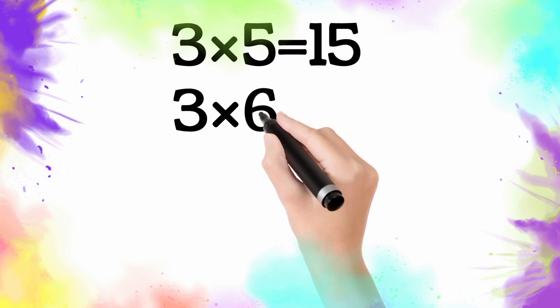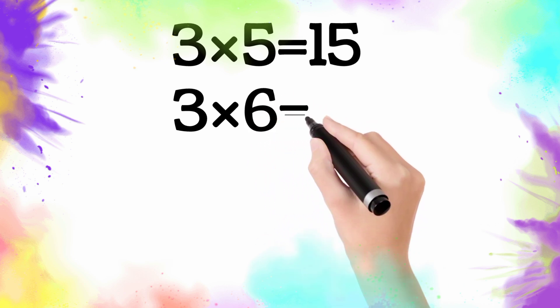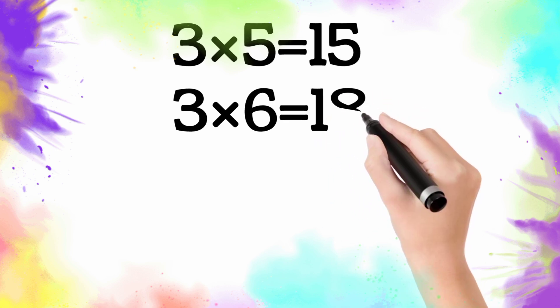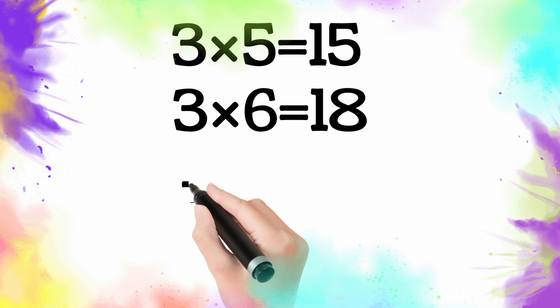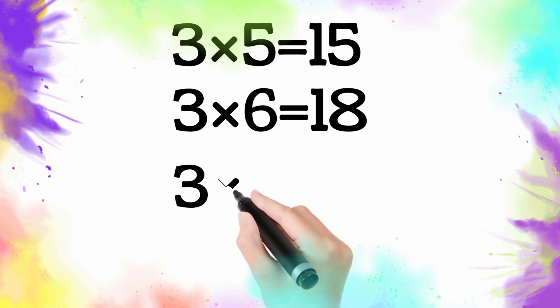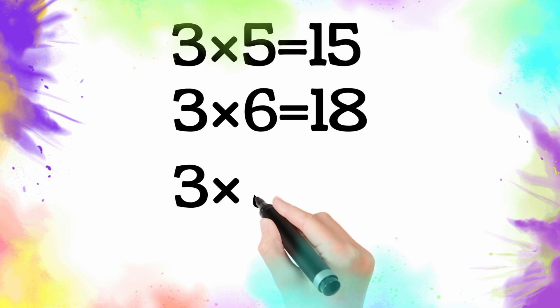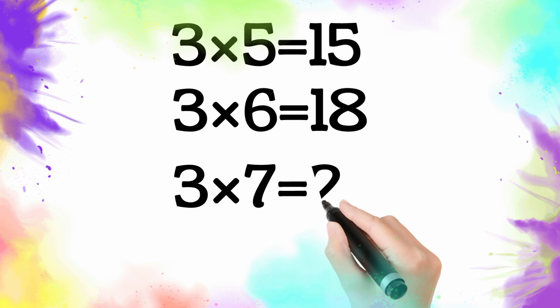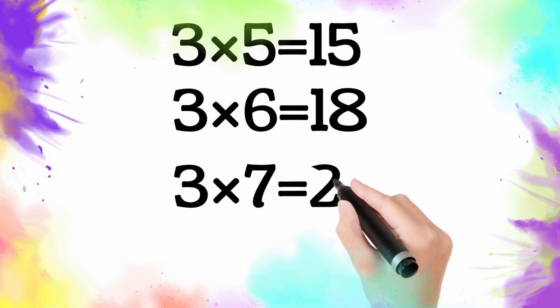Is equal eighteen. So three six, the eighteen. Three multiply by seven is equal twenty-one. So three seven, the twenty-one.